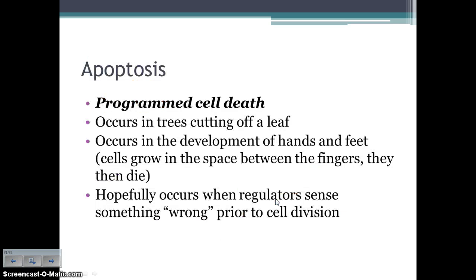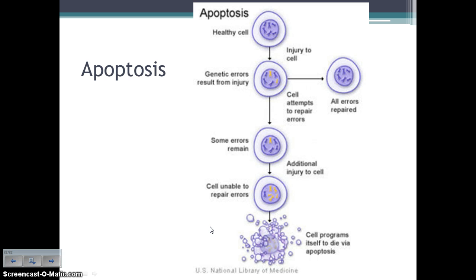If a cell has an error in mitosis, one option is to go through a programmed cell death called apoptosis — essentially cell suicide. A lot of times this is a good thing: it occurs in fall when trees cut off leaves, and it happens in your hands and feet. You start with cells in between your fingers; those cells go through apoptosis, which is why we don't have webbed hands and feet. Hopefully this occurs when a regulator senses something is wrong prior to cell division. If a cell has a mistake, it either repairs those errors, or if the mistakes continue, it goes through apoptosis.